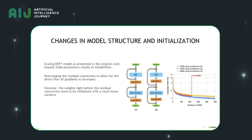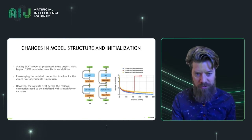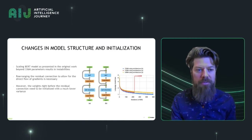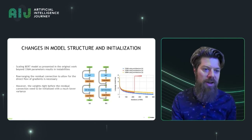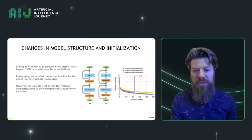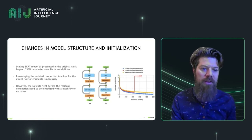There are a few details worth pointing out for people also working on this. We found that we needed to change the model structure for BERT models in order to scale them and make them larger. Specifically, we had to move the residual connection in order to allow for the direct flow of gradients in a similar style to how GPT-2 models typically deal with it. We found that BERT models also needed the residual connection in the same place; otherwise, the optimization didn't proceed, as you can see in the graph. We also found that the weights right before residual connections need to be initialized with a much lower variance in order to get the model to converge.